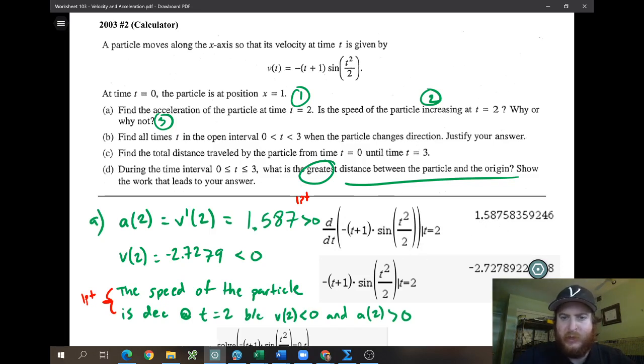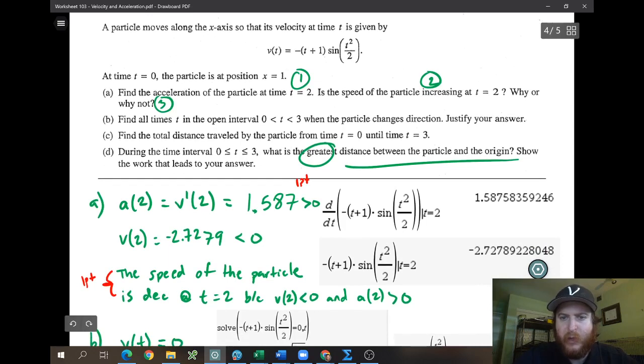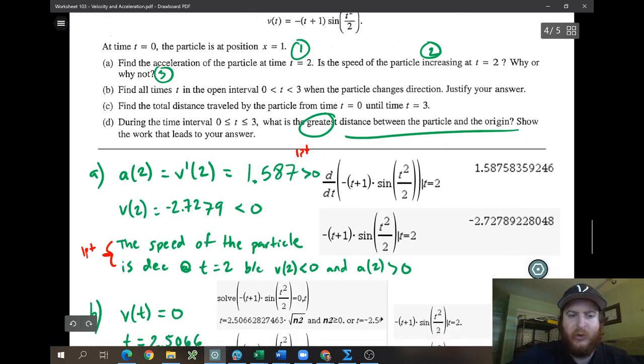And then B says, is the speed of the particle increasing or decreasing? Really, it only says increasing, but we can kind of do both. So for this one, we need to compare the sign. So I'm going to say that the sign was greater than 0. Then I'm going to just do the velocity at time 2. That was negative, so I'm going to say it's less than 0. You need to write this down. You cannot just type it into your calculator. You need to have that number and that number to get credit.